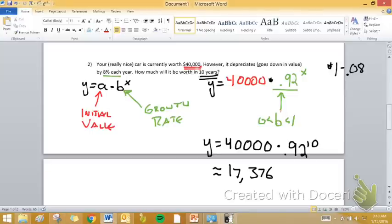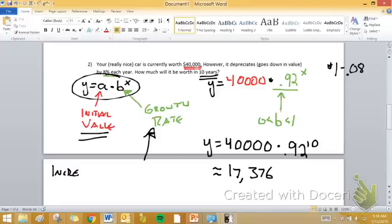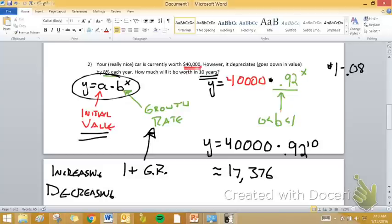To summarize from this video, we're going to make our exponential functions take this form. The initial value is easy to find. The growth rate, we have to get creative with that. If we are increasing by a certain percentage, your growth rate will be 1 plus whatever that growth rate is, like we did in our first example. If it's decreasing, we're going to do 1 minus our growth rate, like we did in our second example.